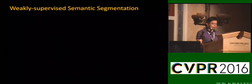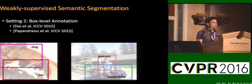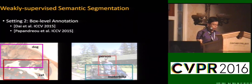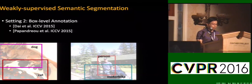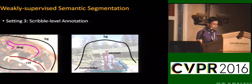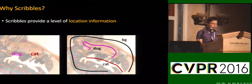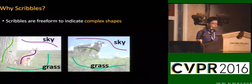Our method belongs to weakly supervised semantic segmentation. In the first setting, image-level labels are used for supervision. Since there is no clear object location information, the semantic result may not be very accurate. The second line uses box-level annotation, providing object bounding boxes, yielding better quality results. Our method belongs to setting three, where scribble annotation is used. We choose scribbles because they show more location information of objects compared to image-level labels, and provide an interactive and flexible way to label regions with complicated shapes, such as sky and grass.